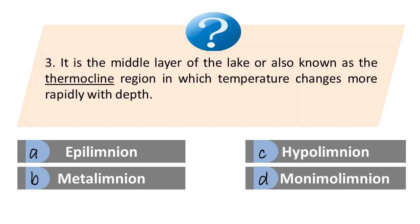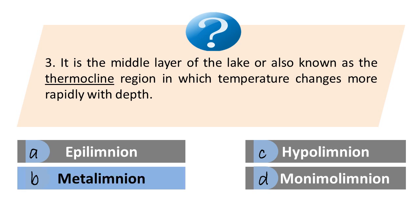Question: It is the middle layer of the lake, also known as the thermocline region, in which temperature changes more rapidly with depth. A. Epilimnion. B. Metalimnion. C. Hypolimnion. D. Monimolimnion. The answer is B. Metalimnion — meta means the middle layer.